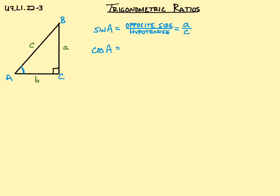Let's look at cosine of A. Well, cosine of A, we remember, is adjacent side over the hypotenuse. And if we look at adjacent side, that's going to be side b, so we get b over c.